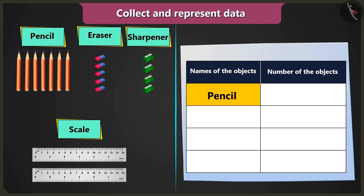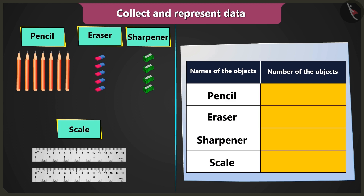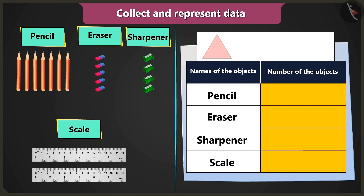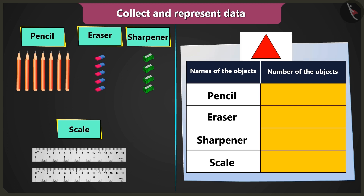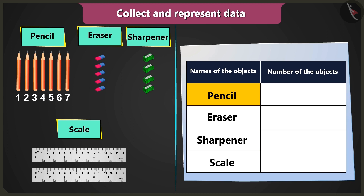In the column 'names of the objects', I wrote pencil, eraser, sharpener, and scale. And now? Now, in the column 'count of objects', you have to draw as many triangles, squares, or circles as the number of objects. So, we will draw triangles to fill the table. You have seven pencils, so you have to draw seven triangles in the column 'count of objects'.